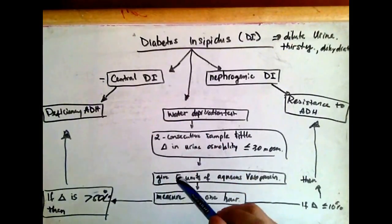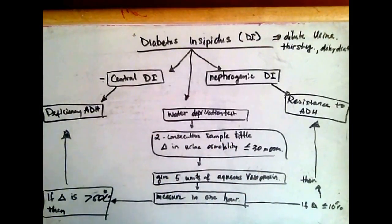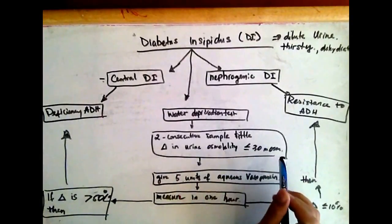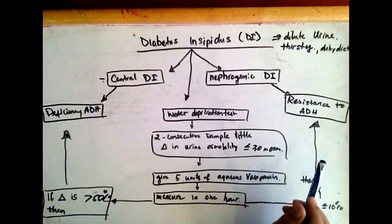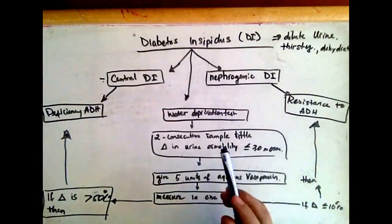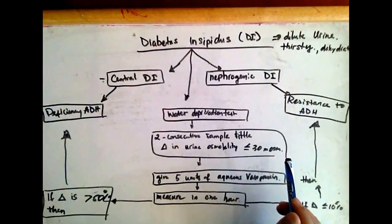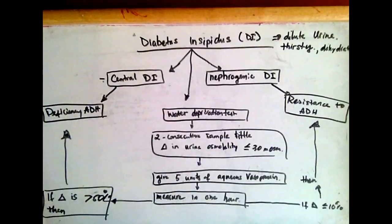When we see that two consecutive samples of the urine have little change in urine osmolality, less than 30 milliosmol, then we give them five units of aqueous vasopressin and measure the urine osmolality one hour after.